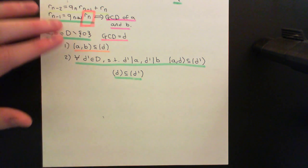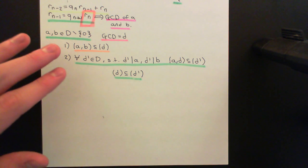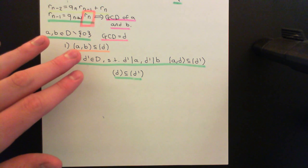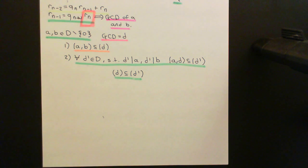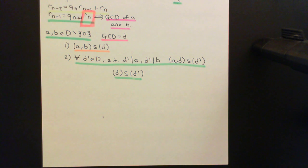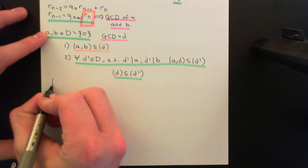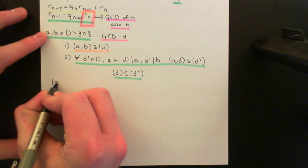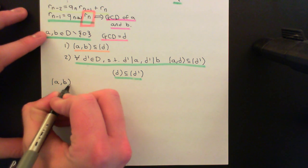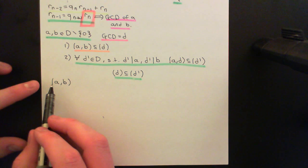There is a nice case where you can easily conclude that an element is a greatest common divisor, and our final remainder is going to satisfy that case. A nice, easy case where you can conclude that an element is a greatest common divisor is if you can find a principal ideal that is equal to the ideal generated by A and B.